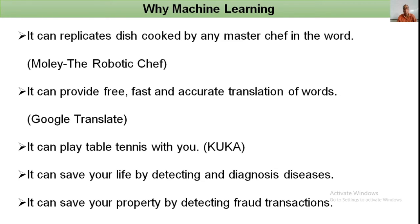Machine learning can also save your property by detecting fraud. If a student's account history shows a minimum transaction of 100 rupees and a maximum of 1000 rupees, and the next transaction is suddenly around 10,000 rupees, the machine immediately identifies that unusual transaction and sends a message asking whether the same person is using that account.